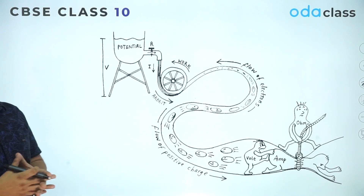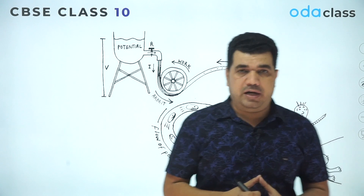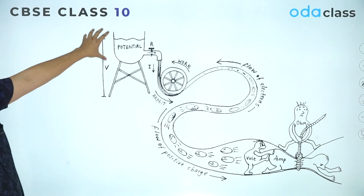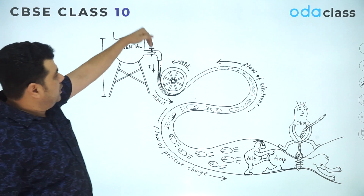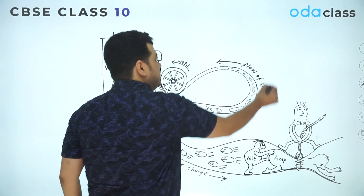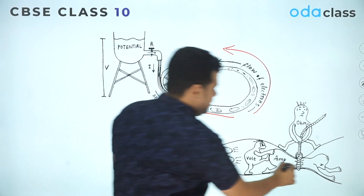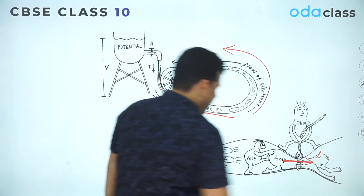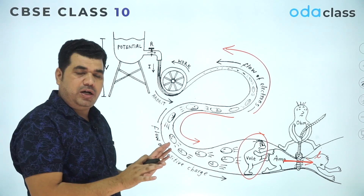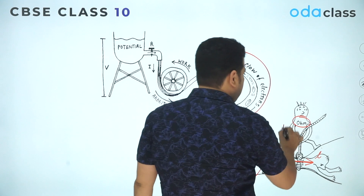I want to demonstrate the function of voltage, resistance, and current using this diagram. In this diagram you can see there is a potential, and from that potential this is the flow of electrons. The direction of electron flow is in that direction, and the direction of electric current is in the opposite direction. Voltage is the quantity which is actually pushing the current to flow.